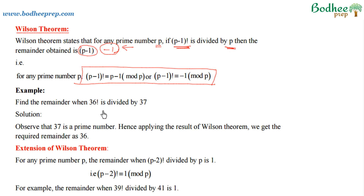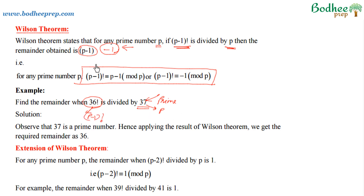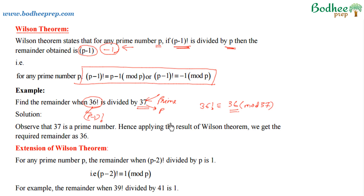Let us take an example. If we have to find the remainder when 36! is divided by 37, we can observe that 37 is a prime number and 36 is 1 less than 37. So if we consider p = 37, then 36! is (p-1)!. This is a direct application of Wilson's theorem, so the remainder when 36! is divided by 37 is 36 itself.